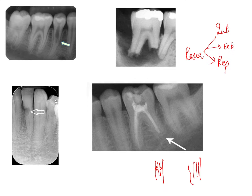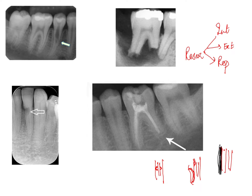In replacement resorption, the roots of the teeth get fused completely to the alveolar bone — they become one unit. When you percuss a tooth with replacement resorption, it will give a very metallic sound. Radiographs play a very significant role in identifying resorption of teeth.